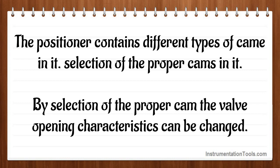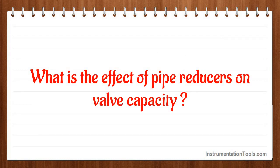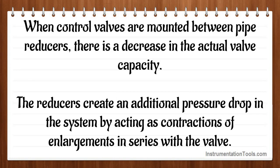What is the effect of pipe reducers on valve capacity? When control valves are mounted between pipe reducers, there is a decrease in the actual valve capacity. The reducers create an additional pressure drop in the system by acting as contractions or enlargements in series with the valve.